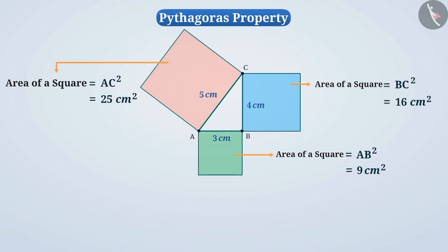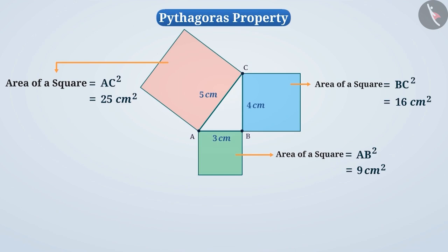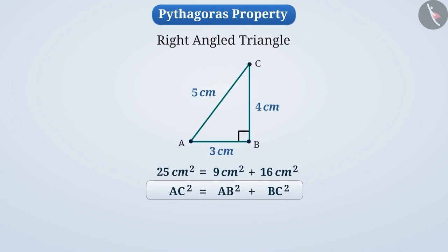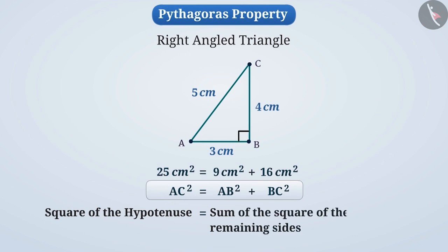Here comes an interesting point. We see that 9 cm² + 16 cm² = 25 cm², or in terms of the square of sides: AB² + BC² = AC². This is an interesting relationship between the hypotenuse and the remaining sides of a triangle. In a right triangle, the square of the hypotenuse is equal to the sum of the squares of the remaining sides. We know this as the Pythagoras property.